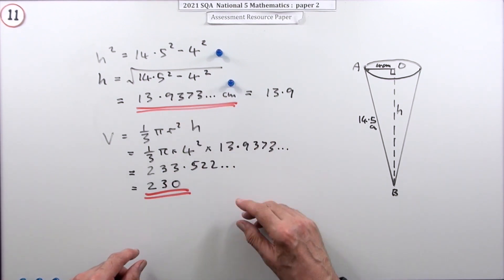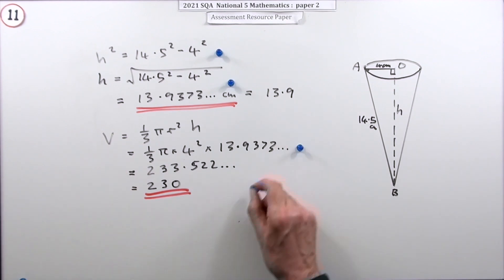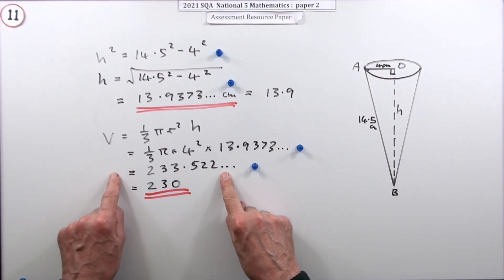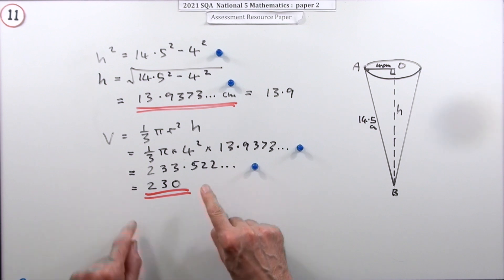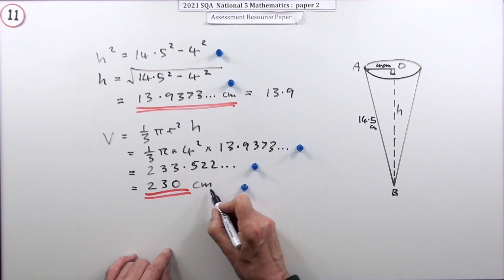Now where were the marks? Well, there was one for substituting the figure you had for the height into the volume of a cone. There was one for getting this answer—the actual answer—but the separate mark at the end was for writing it the way that you were asked to: two significant figures. And don't forget, although I didn't see a mark for that, it was a volume, so that was centimeters cubed.